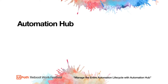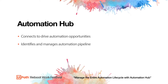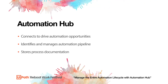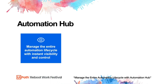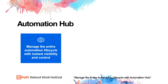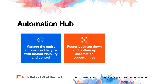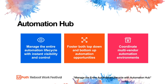UiPath Automation Hub is the one place where your company can connect to drive your automation opportunities forward. It's the one place to identify and manage your automation pipeline, and the one place to store all process documentation related to your automations. It gives you one central location to store reusable automation components and even automations. Automation Hub is the only way to manage the entire automation lifecycle with instant visibility and control, to foster both top-down and bottom-up automation opportunities, and to coordinate multi-vendor automation environments — all in one place.